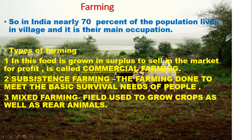Producers are green plants that can produce their own food and provide food to other living things. Now we will learn about farming. In India, nearly 70 percent of the population lives in villages, and farming is their main occupation.